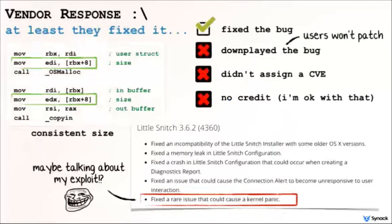So let's wrap this up. The vendor fixed the bug pretty quickly — I said they should just extract a 32-bit value and pass that to both the allocation and the copy function, and that's exactly how they patched it. Unfortunately, they really downplayed the bug. The exact quote was they fixed 'a rare issue that could cause a kernel panic.' This is not accurate — it's not a rare issue, it was in all versions of Little Snitch, and it's not a kernel panic, it's an exploitable security vulnerability. I was a little irked because they're a security company providing paid security tools — if someone reports a security bug, at least let your users know they should update. I think they've gotten better.